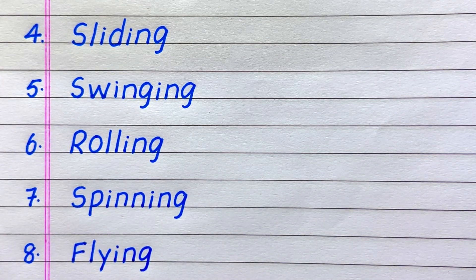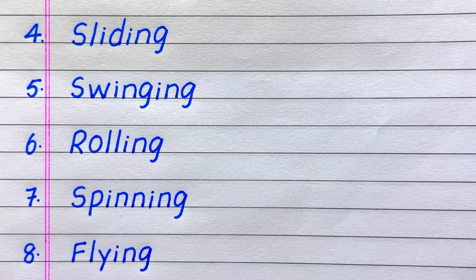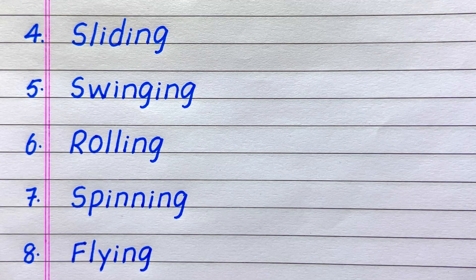The 4th example of a motion is sliding, 5th swinging, 6th rolling, 7th spinning, 8th flying.